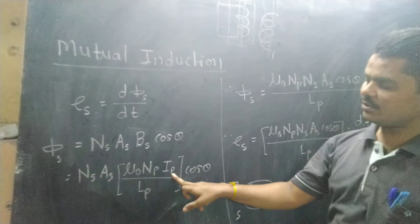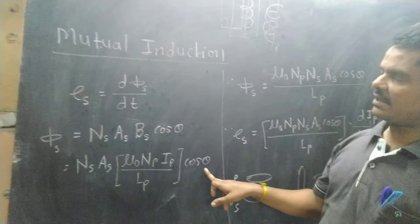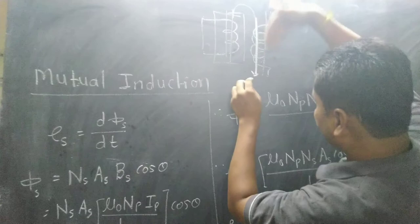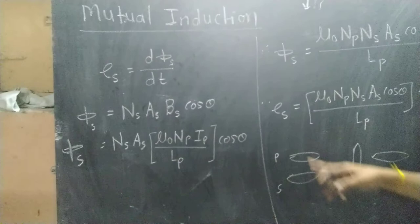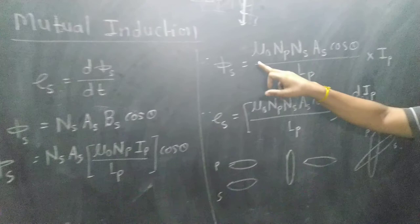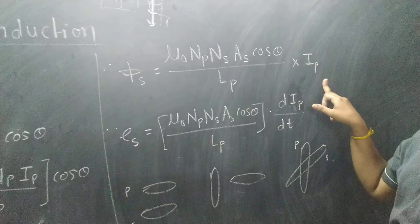Cos theta: the area vector of the secondary coil is perpendicular to the area. Then this is the formula. If this is phi, we substitute it into this equation. So phi is equal to mu0 times n times As times cos theta divided by n_p, into I_p.